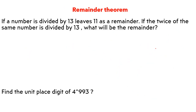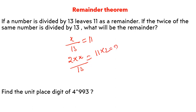Question 5: A number X divided by 13 leaves 11 as a remainder. If twice the same number is divided by 13, what is the remainder? Using the property we discussed: doubling the number means doubling the remainder, so remainder becomes 2 × 11 = 22. Since 22 is greater than the divisor 13, divide 22 by 13 again, giving remainder 9.